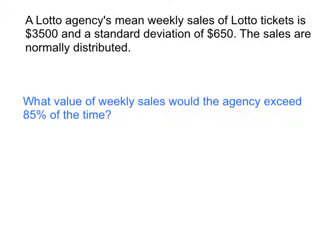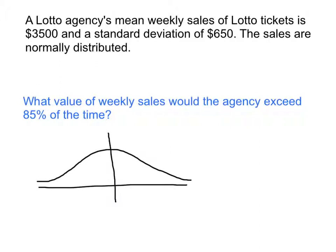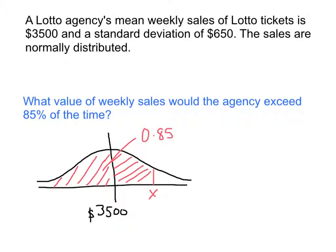Let's look at another example. A lotto agency's mean weekly sales of lotto tickets is $3,500, with a standard deviation of $650. The sales are normally distributed. What value of weekly sales would the agency exceed 85% of the time? You can draw a sketch: the mean is $3,500, standard deviation is $650, and we need to find the X value where the shaded area is 0.85.